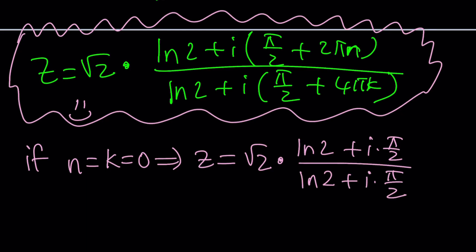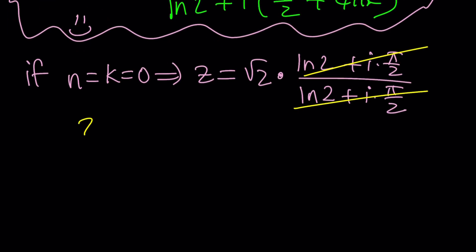There we go. And guess what that's going to give you? Z equals root 2 in its most simplest, most glorious form. Now, I also want you to consider the following.